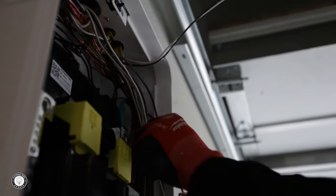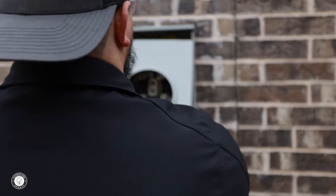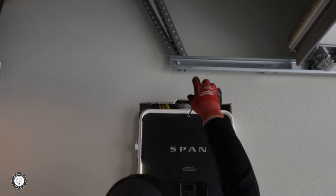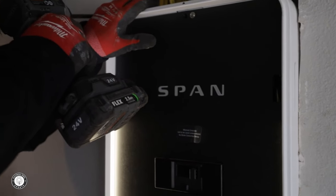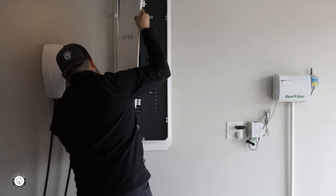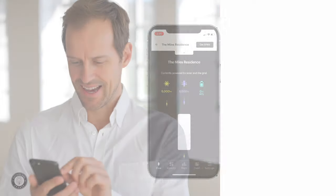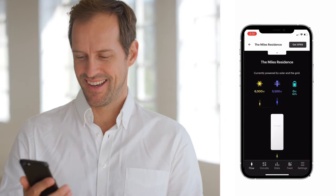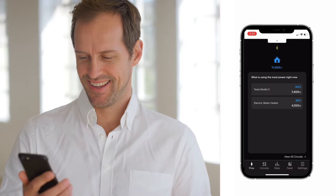Imagine being able to prioritize must-have circuits extending your home battery to last longer in a power outage. You'll have real-time circuit-level control even on the go with the SPAN Home app.